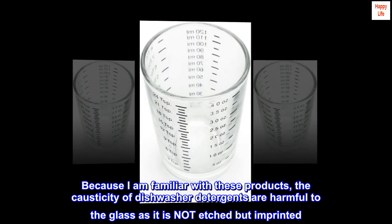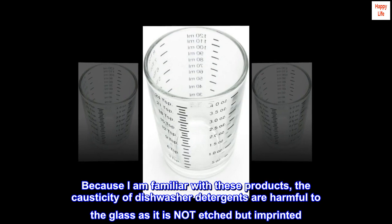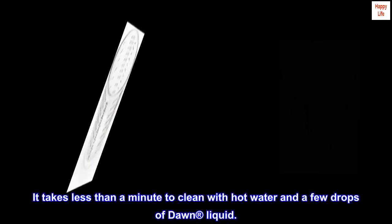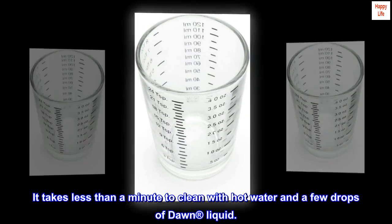Update: Do not wash in dishwasher. Because I am familiar with these products, the causticity of dishwasher detergents are harmful to the glass as it is not etched but imprinted. It takes less than a minute to clean with hot water and a few drops of Dawn liquid.